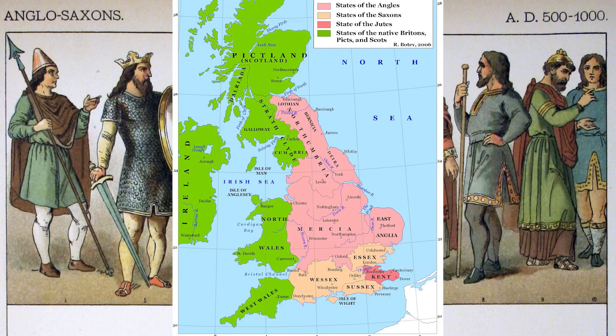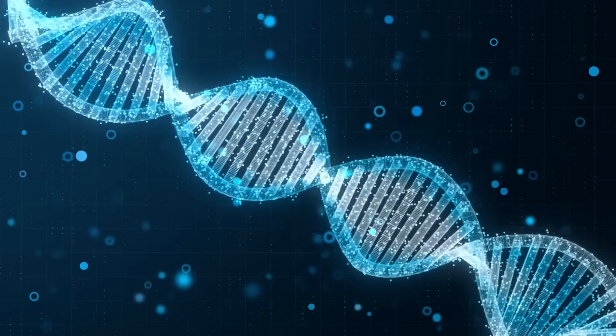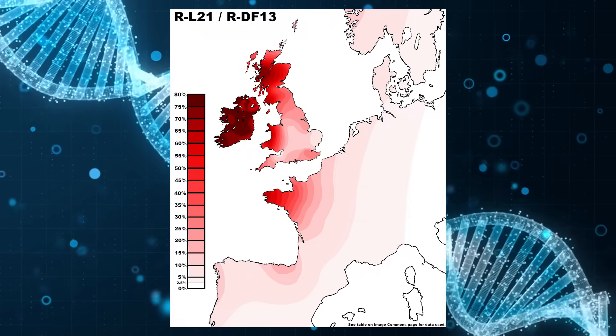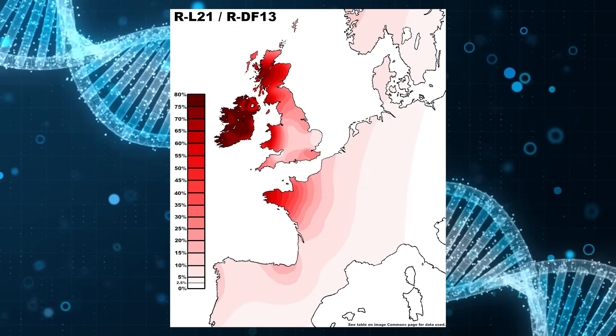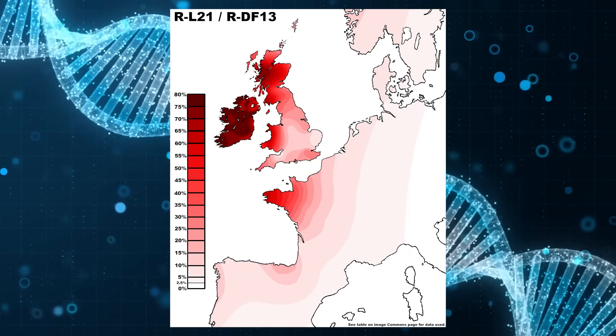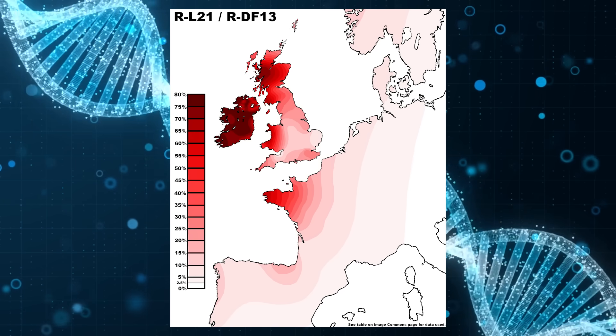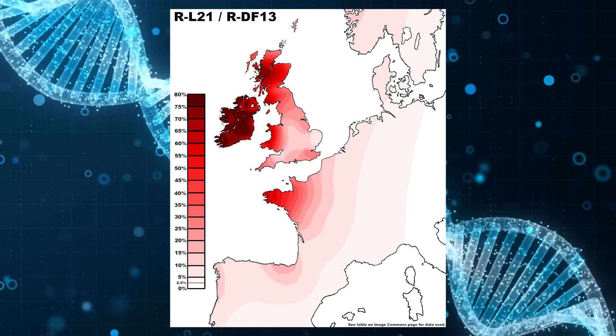Prior to the Anglo-Saxon migrations, ancient England was primarily dominated by two groups: the Celtic Britons and then the Romans, though we know the Romans had little genetic impact on the land. As for the Celtic DNA markers in Britain prior to the Anglo-Saxons, RL21 — which is still found in Atlantic Celtic peoples today — was the dominant Y-DNA haplogroup amongst them.